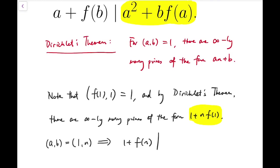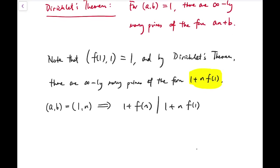Then we will have 1 plus f of n divides 1 plus n times f of 1. Of course I have to say that choose n large enough such that 1 plus n is larger than 2019, which is possible of course. And 1 plus n times f of 1 is prime. And this exists by Dirichlet theorem.